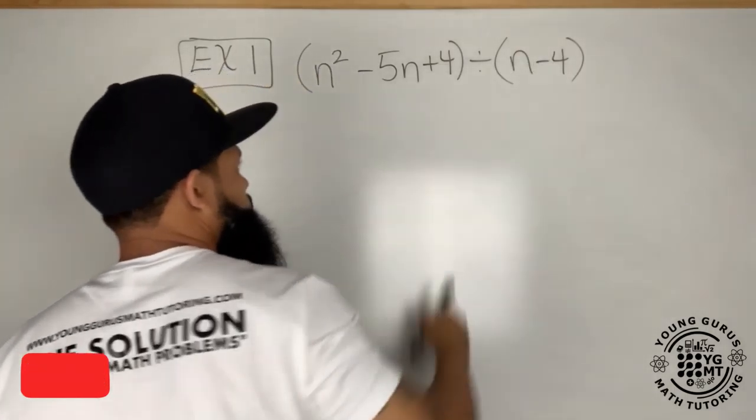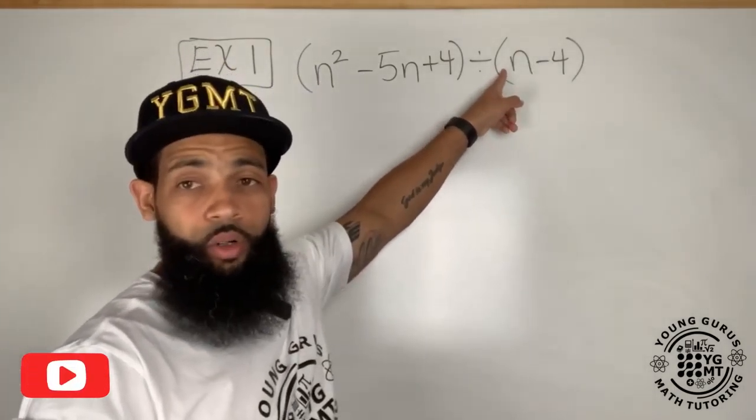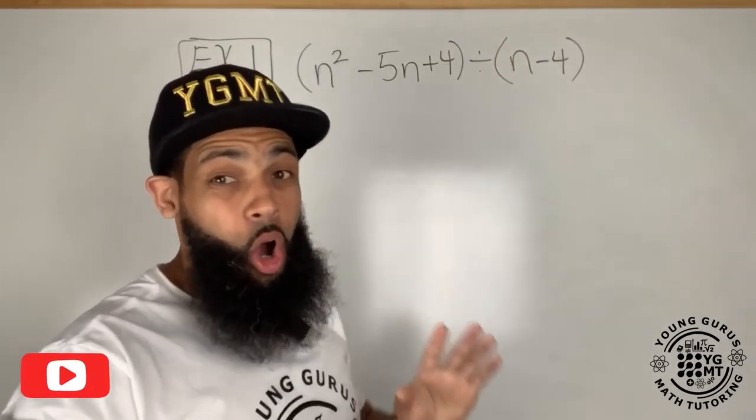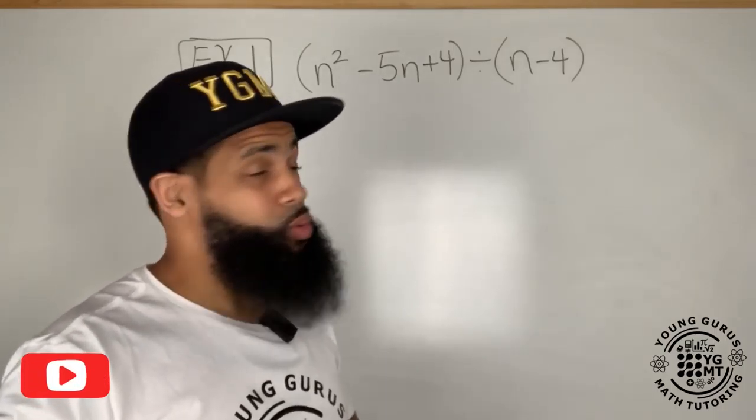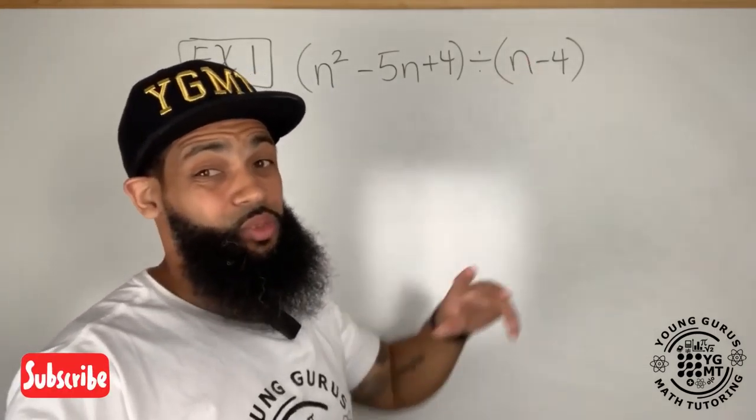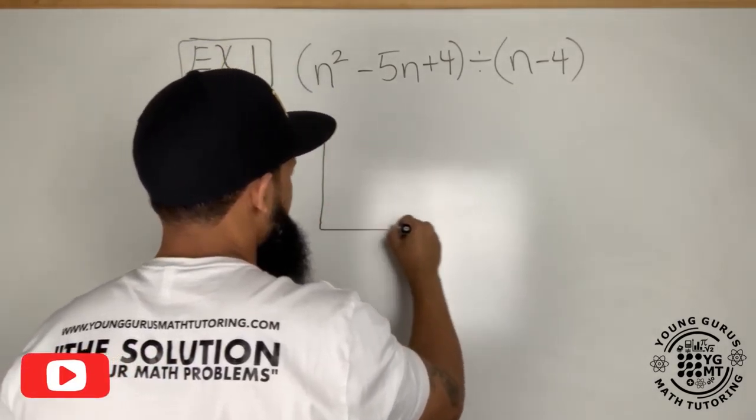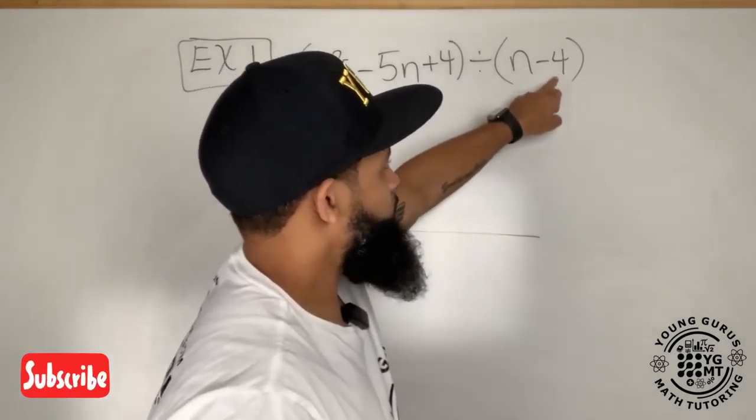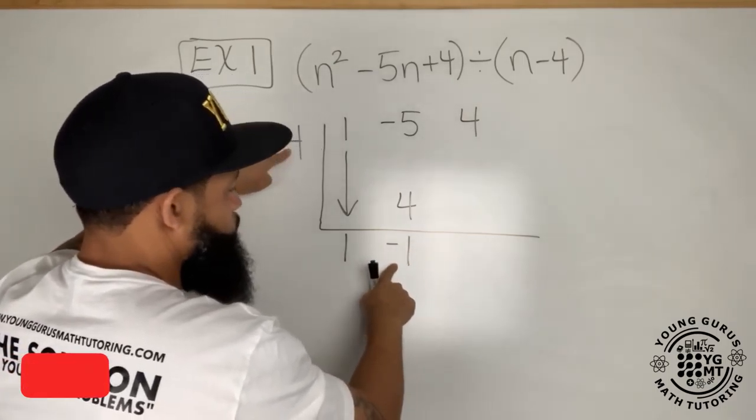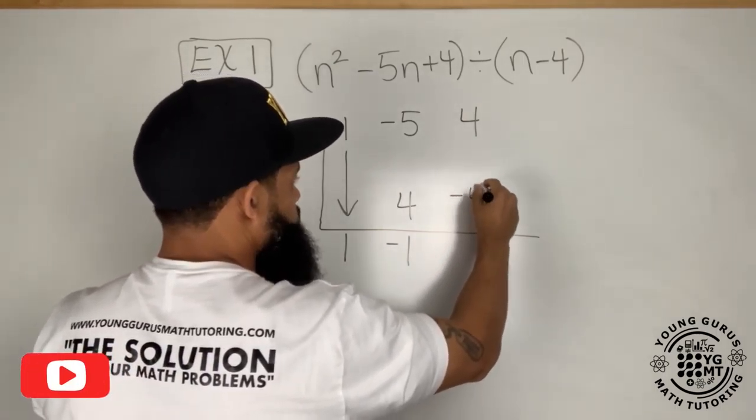My divisor right here has a leading coefficient of one. This only works, synthetic division only works if that leading coefficient is one. I'm going to actually draw a table that looks like this. I'm going to take this term right here, four, and put it there.